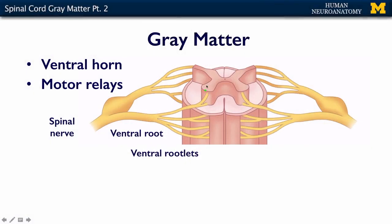In this segment of the lecture, we're going to discuss the ventral horn. The ventral horn is motor and contains motor neurons. Everything on the ventral half of the spinal cord has the same name — ventral horn, ventral rootlets that coalesce to form the ventral root, which then joins with the dorsal root to become the spinal nerve.